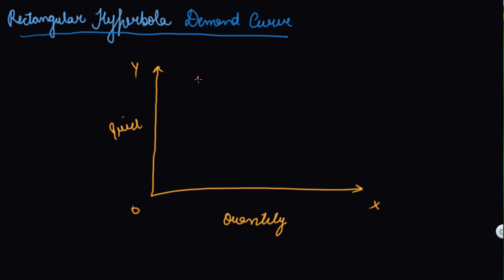This is how it looks. Please draw it perfectly. DD — this is the rectangular hyperbola demand curve.